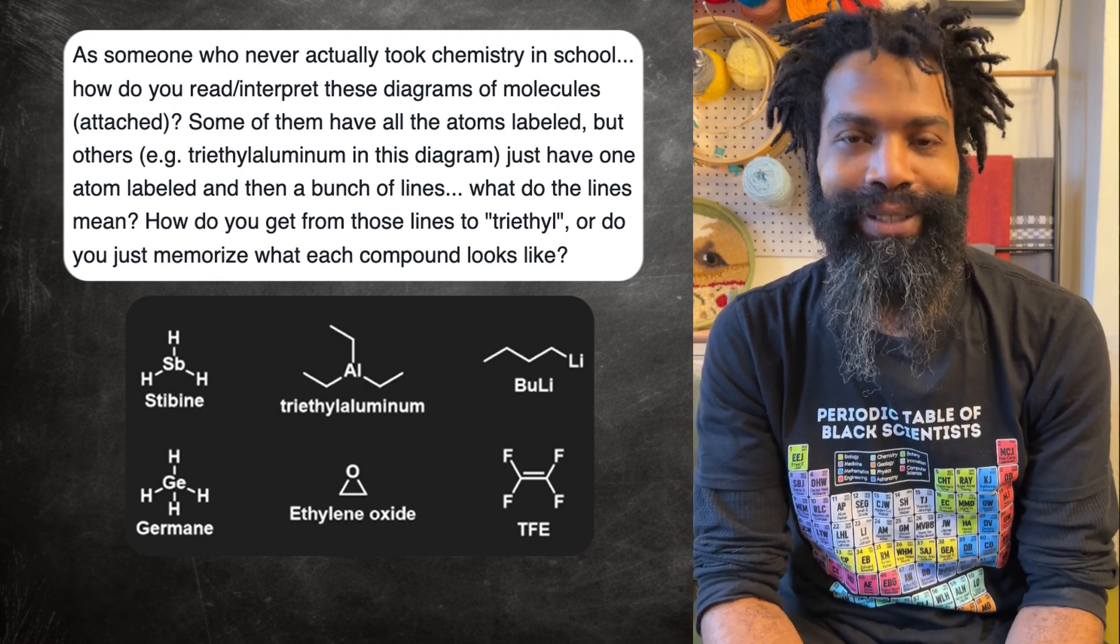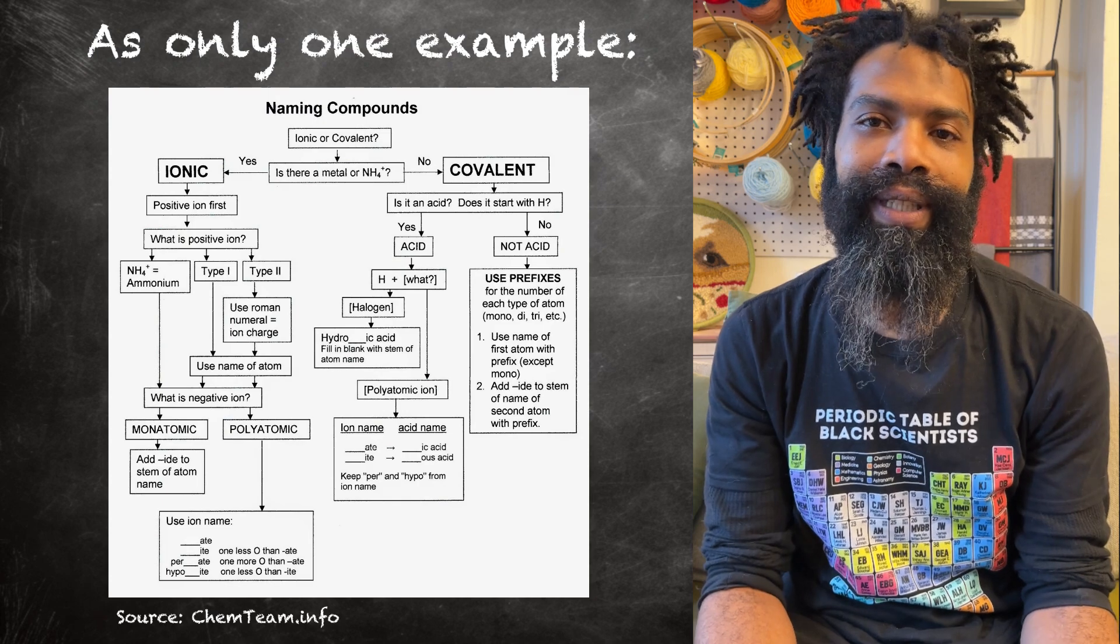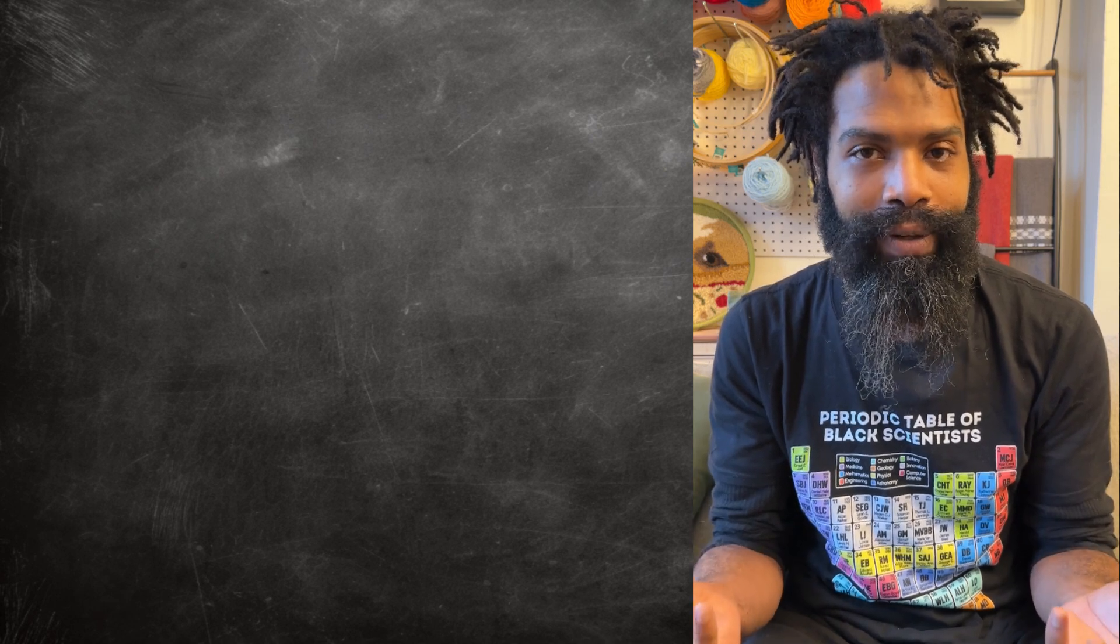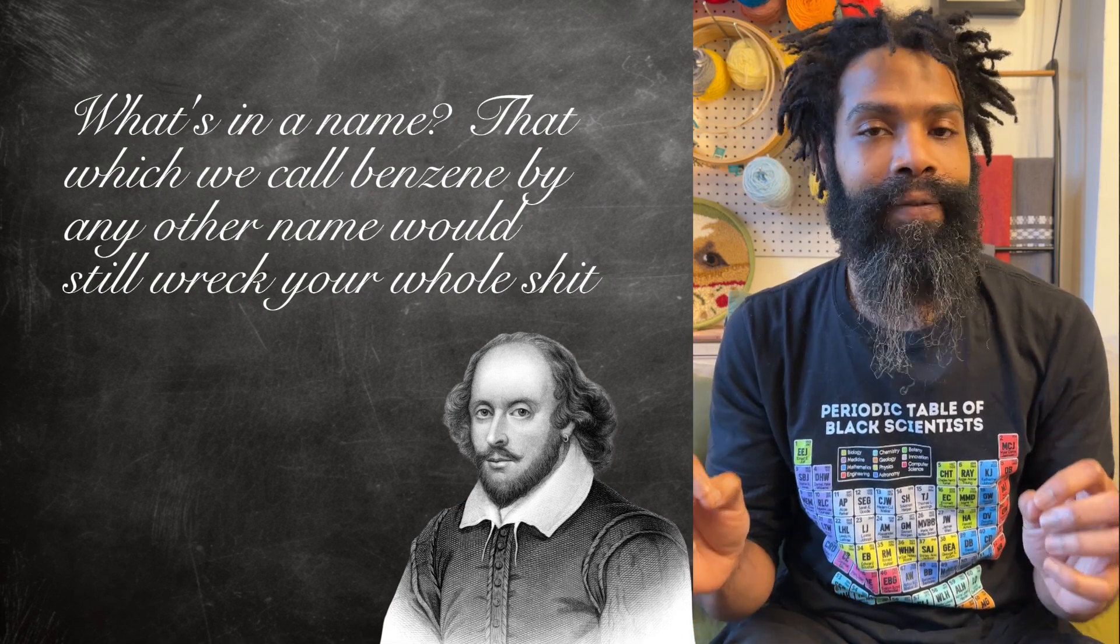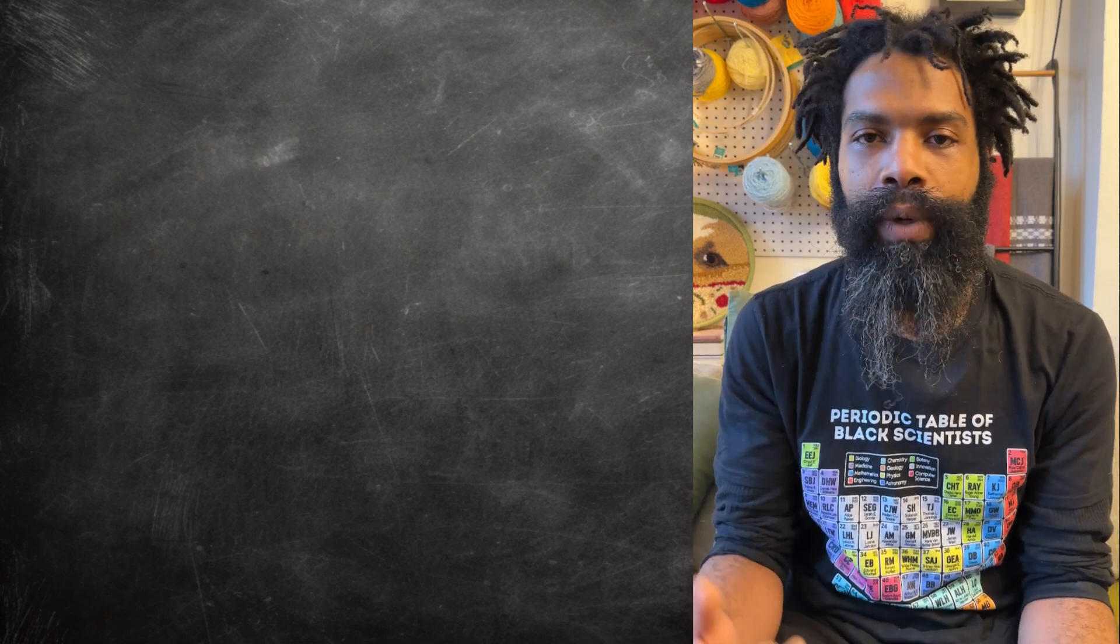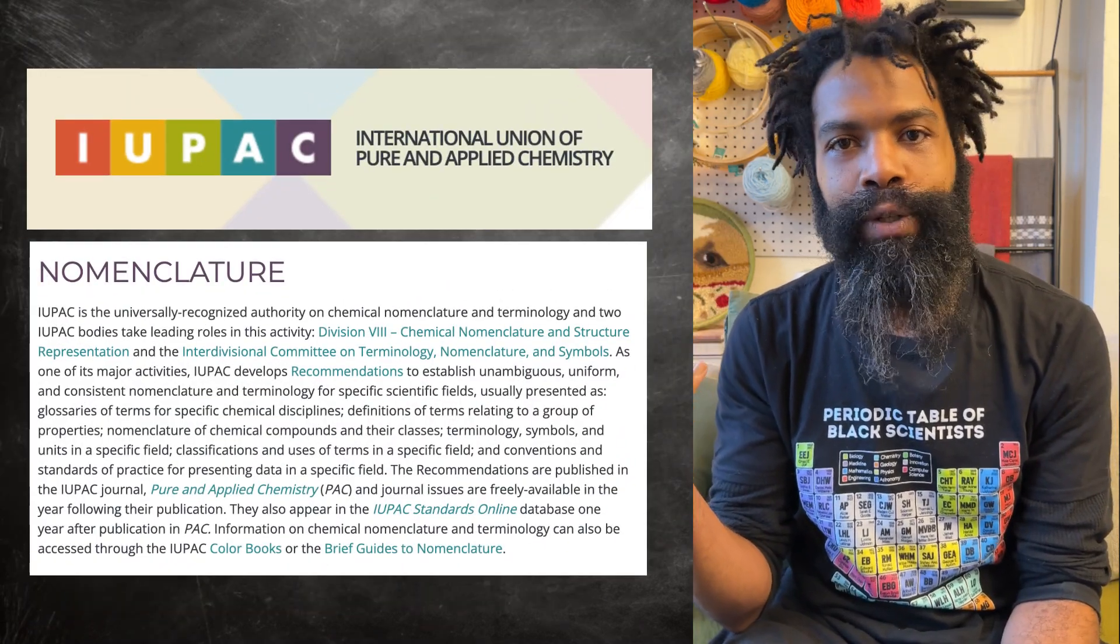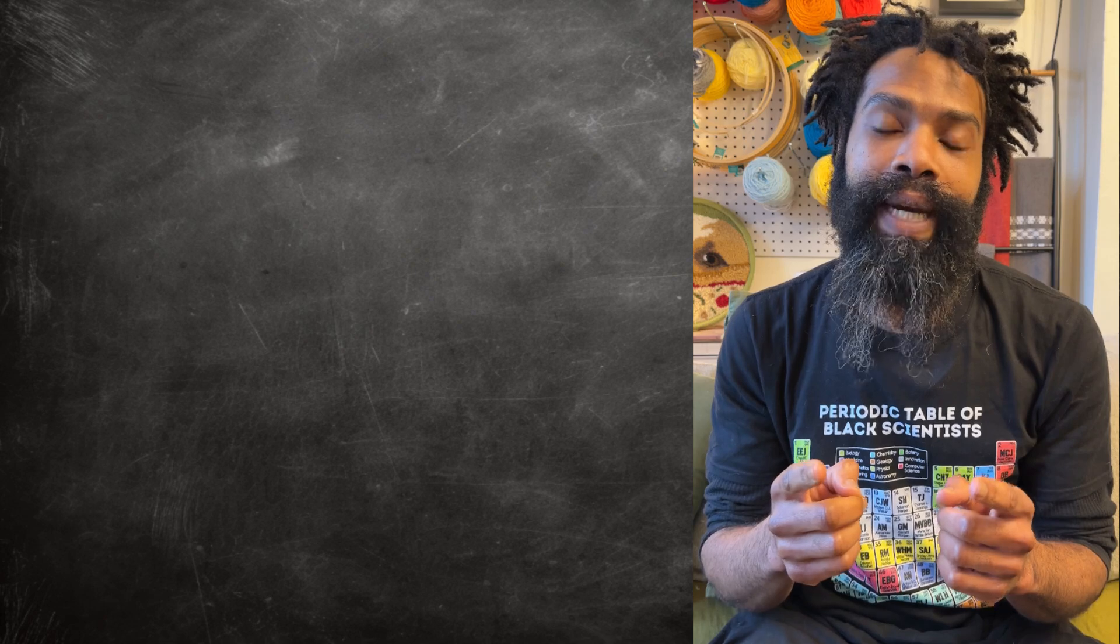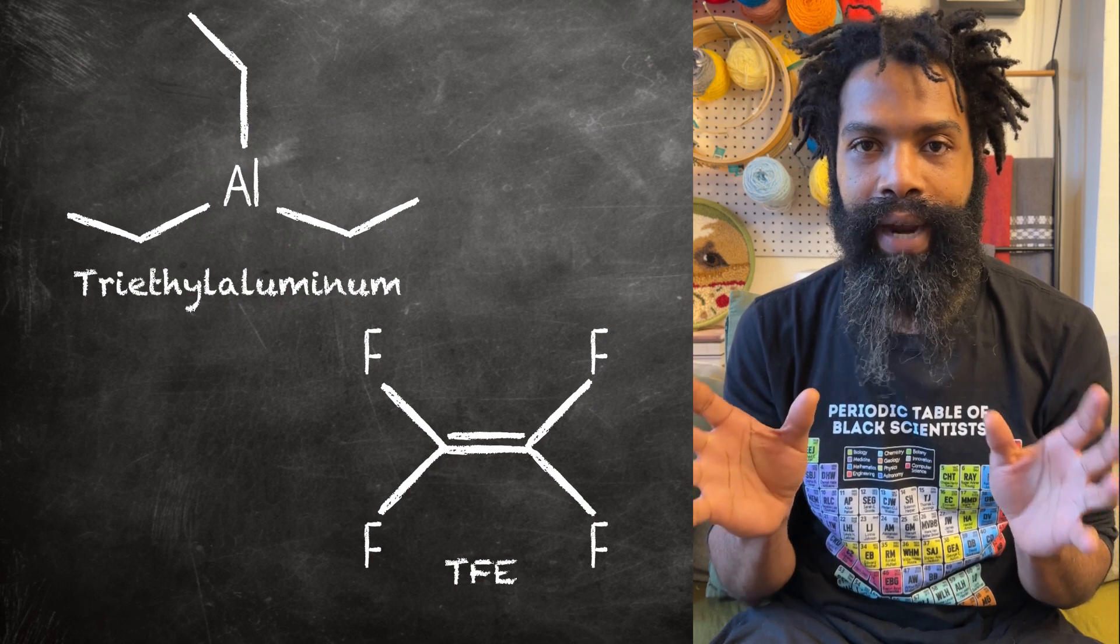Do you just memorize what each compound looks like? No, I'm flattered that you think I have that intellectual capacity to memorize all these names. Part of getting my chemical education, I had to learn the system of rules that let us go from those structures, which are the structures of the molecules, to a name. And this name, if it's the right kind of name, lets you draw the structure. This is legitimately a chunk of an intro chem course, so I'm not going to give you the full list of the International Union of Pure and Applied Chemistry nomenclature rules, or IUPAC rules, because that would be absurd. But what we can do is go through triethyl aluminum and TFE.